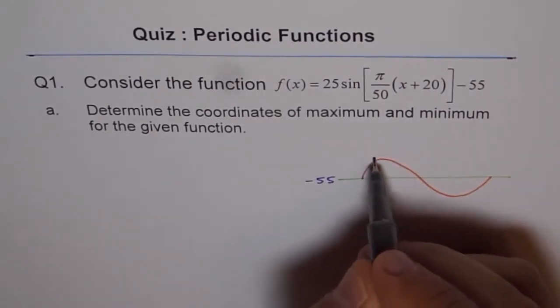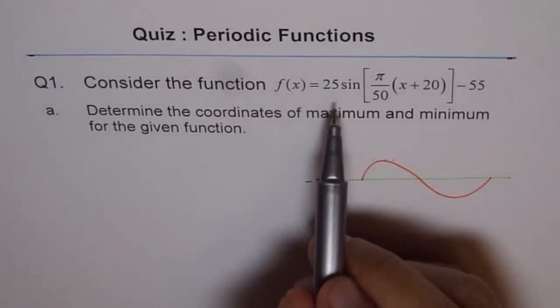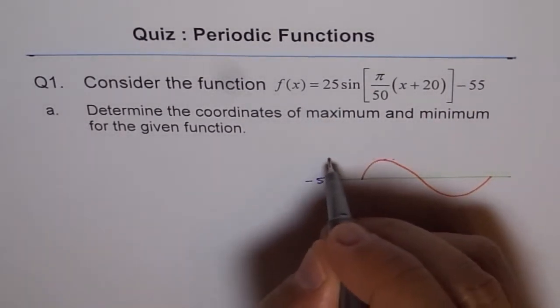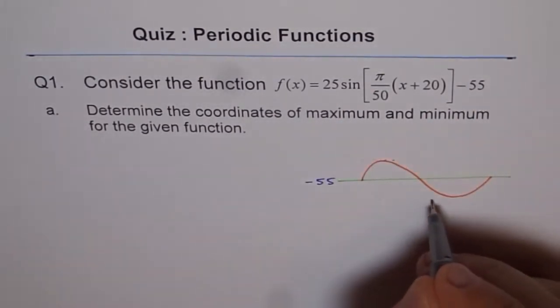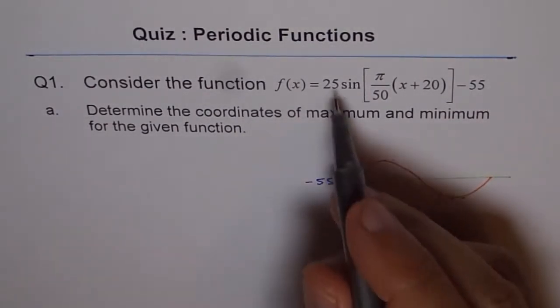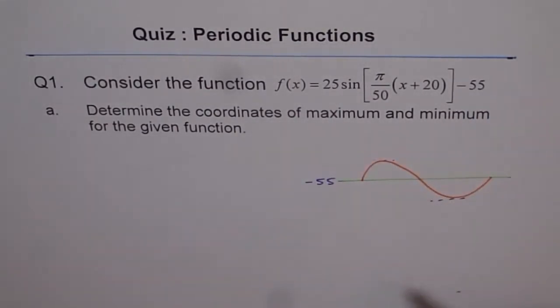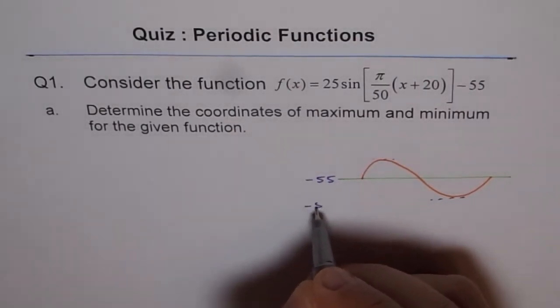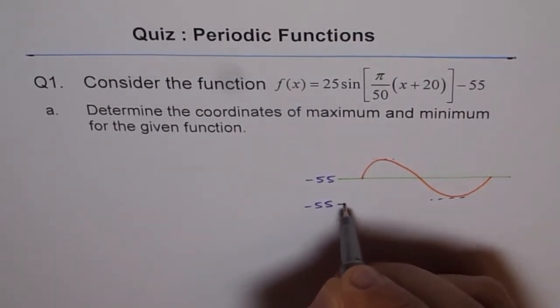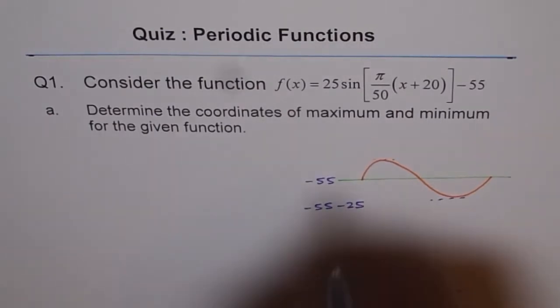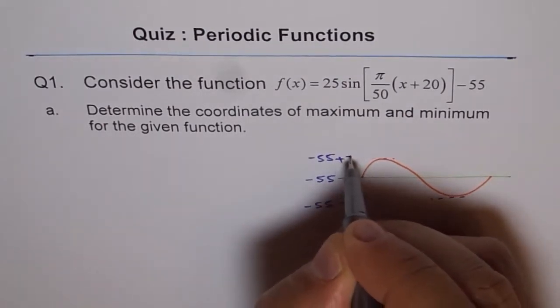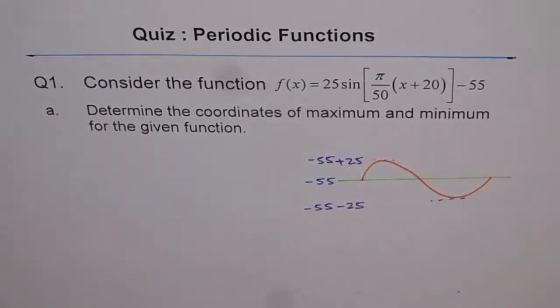And maximum occurs at maximum value is 25 plus this. So we will add 25 and get this value. This is 25 up and then minimum is 25 below minus 55. So I can always write this as minus 55 minus 25, and the maximum at minus 55 plus 25. So that actually gives us maximum and minimum value.